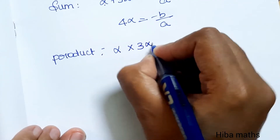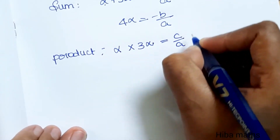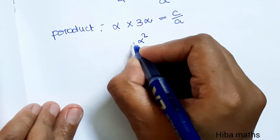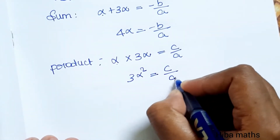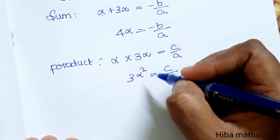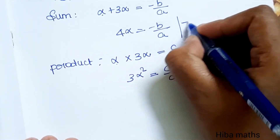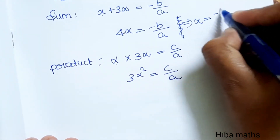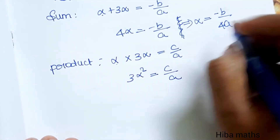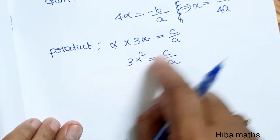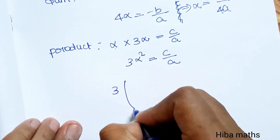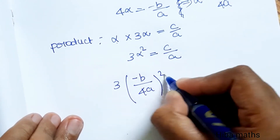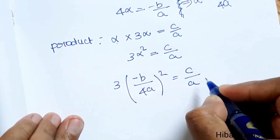Product of roots: α × 3α = C/A, so 3α² = C/A. From the sum, α = -B/(4A). Substituting: 3 × (-B/4A)² = C/A.